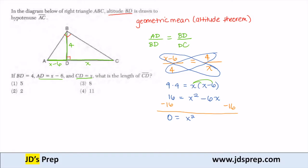Now I have x squared minus 6x minus 16 equal to 0. The reason we need it equal to 0 is to use the zero product principle. In order to use that, I need to factor this quadratic. And so that factors to (x minus 8) times (x plus 2). Setting each factor equal to 0: x minus 8 equals 0, or x plus 2 equals 0.